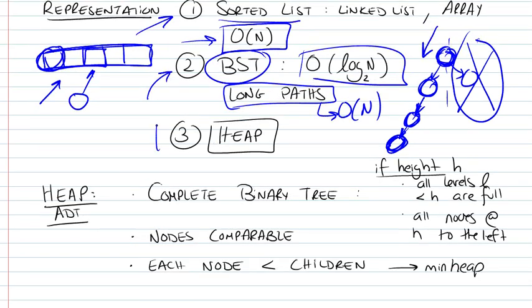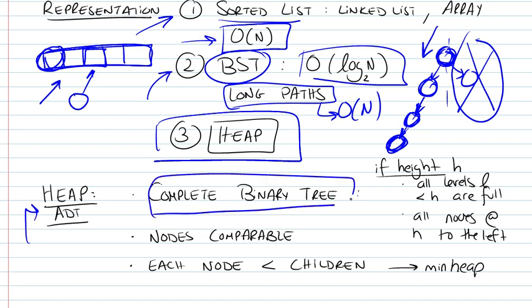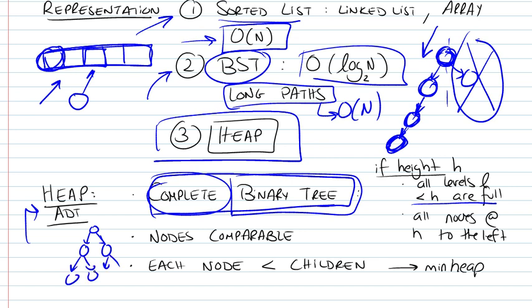The solution to our problem would be a heap, and here's how we define a heap. A heap is a complete binary tree. It's a binary tree, we've already seen what it is. A node in a binary tree can have a maximum of two children. And a complete binary tree is a tree such that all of its levels are full, except the very last one.